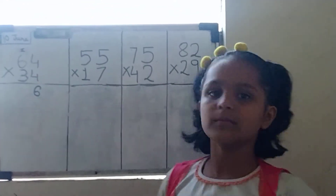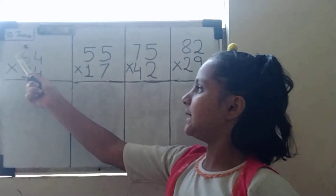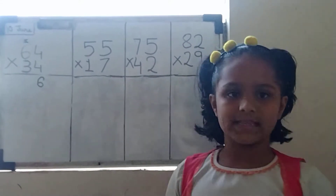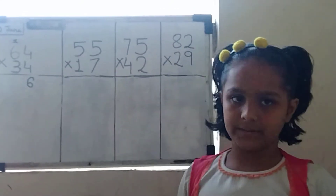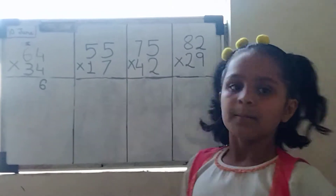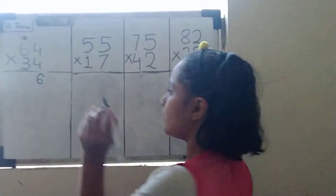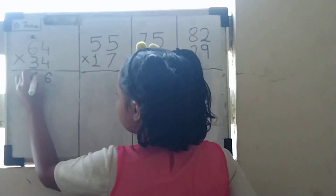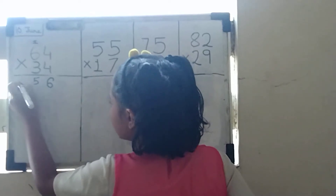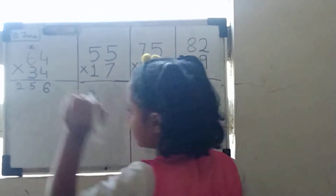Then we will multiply 6 multiplied by 4. The answer will be 24. Then plus 1 equals to 25. Then we will write 5 here and 2 will be carried here.